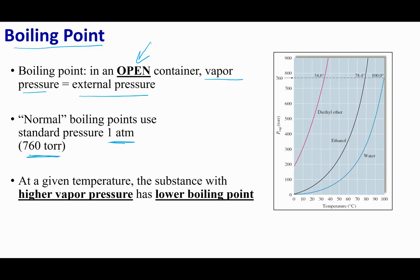The normal boiling point is defined at 1 atm or 760 torr. At Santa Barbara, being close to sea level, things boil near their normal boiling point. However, at higher altitudes like Colorado or the Rocky Mountains, atmospheric pressure is much lower, so water and other substances boil at much lower temperatures. This is why packaged food gives different cooking instructions for high altitudes — things boil at lower temperatures, transferring less energy.